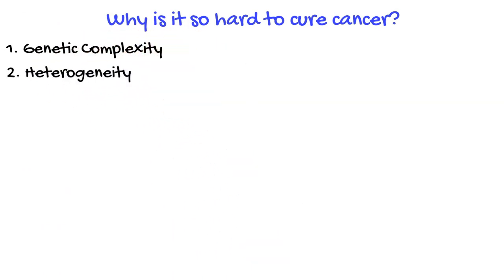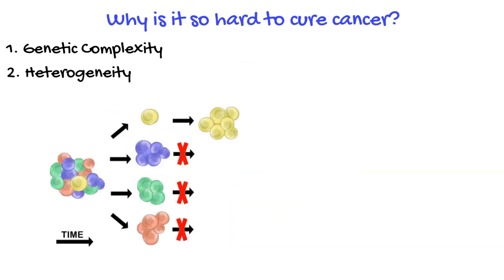Number two, heterogeneity. One major hurdle is the heterogeneity of cancer cells within a tumor. This means that even within a single tumor, there can be different subtypes of cancer cells with varying genetic profiles and responses to treatments.